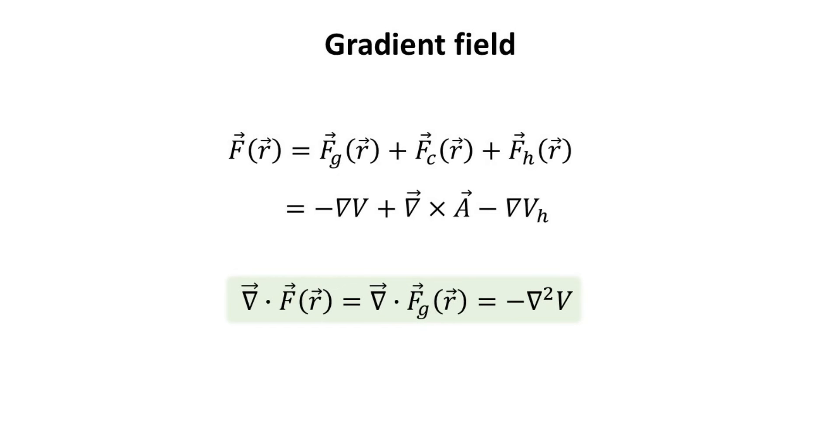Since the curl and harmonic fields are both divergentless, taking the divergence of F then allows us to isolate only the contribution from the gradient field. We recognize then that the divergence of F yields us the source term for the gradient field.